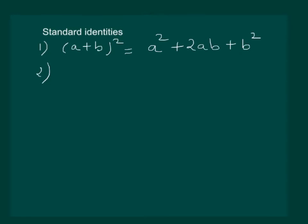Second identity: (a-b)² = a² - 2ab + b².